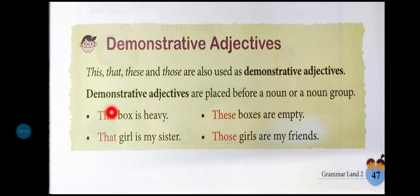Demonstrative adjectives are placed before a noun or a noun group. کہیں بھی noun ہو یا noun group ہو، اس کے پہلے اگر یہ words آتے ہیں تو وہ demonstrative adjectives کہلائیں گے۔ Like: this box is heavy - یہ box جو ہے یہ noun ہے، اس کے پہلے والا this ہے یہ demonstrative adjective کہلائے گا۔ These boxes are empty - boxes جو ہے وہ noun ہے، اس کے پہلے والا these جو ہے وہ demonstrative adjective۔ That girl is my sister. Those girls are my friends - یہ بھی those girls، جو girls کے پہلے ہے تو demonstrative adjective۔